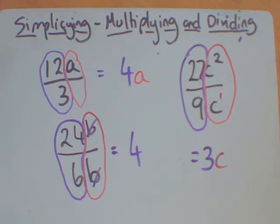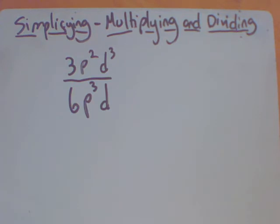There is one time where you're going to end up with a fraction on the denominator. Well, you're going to end up with a fraction because there's something left on the denominator. Let's have a look at one of those. So you'll see this time I've actually put three letters into this, but I'm going to do the same thing. I'm going to do the numbers, then I'll do the p's, then I'll do the d.